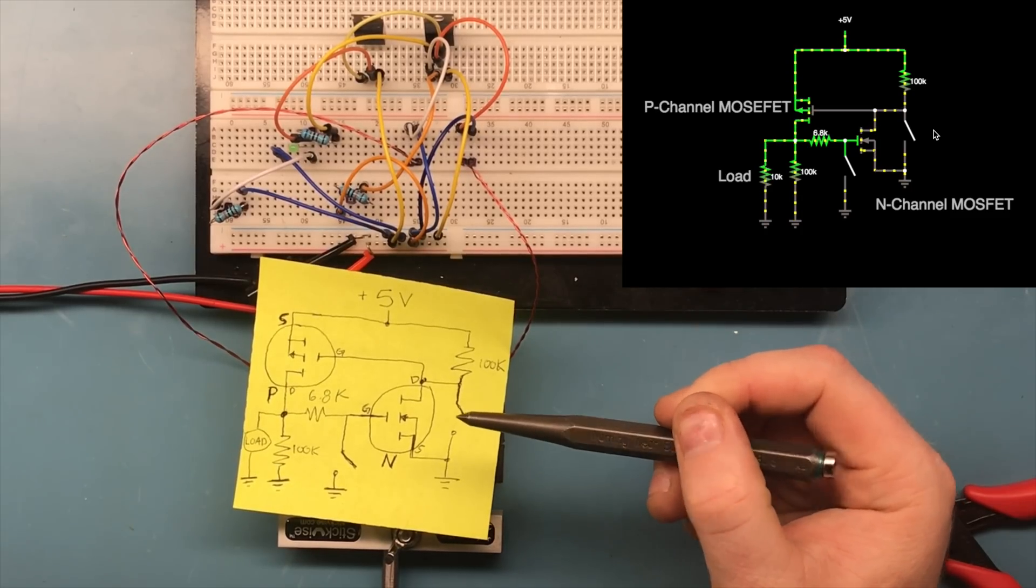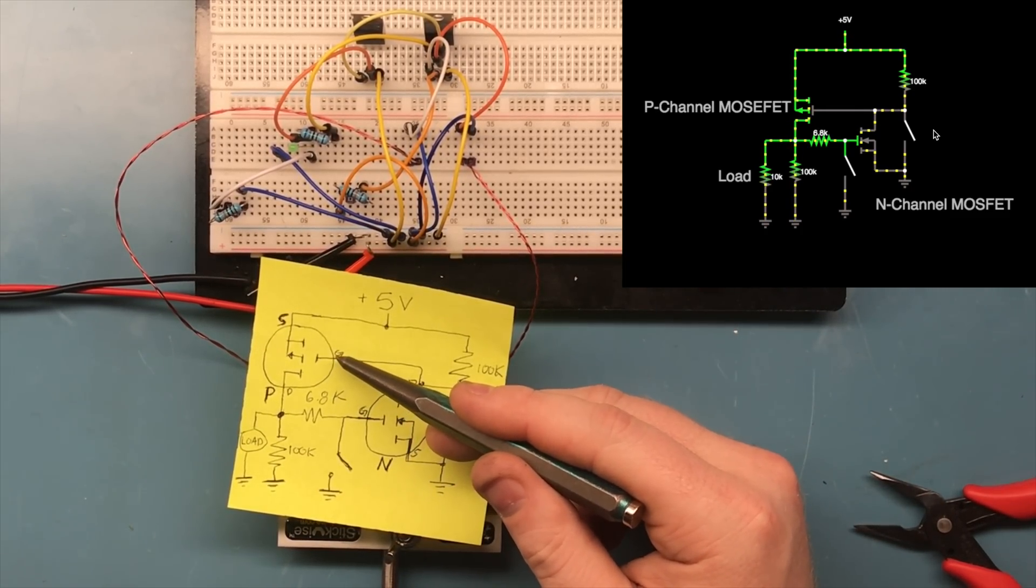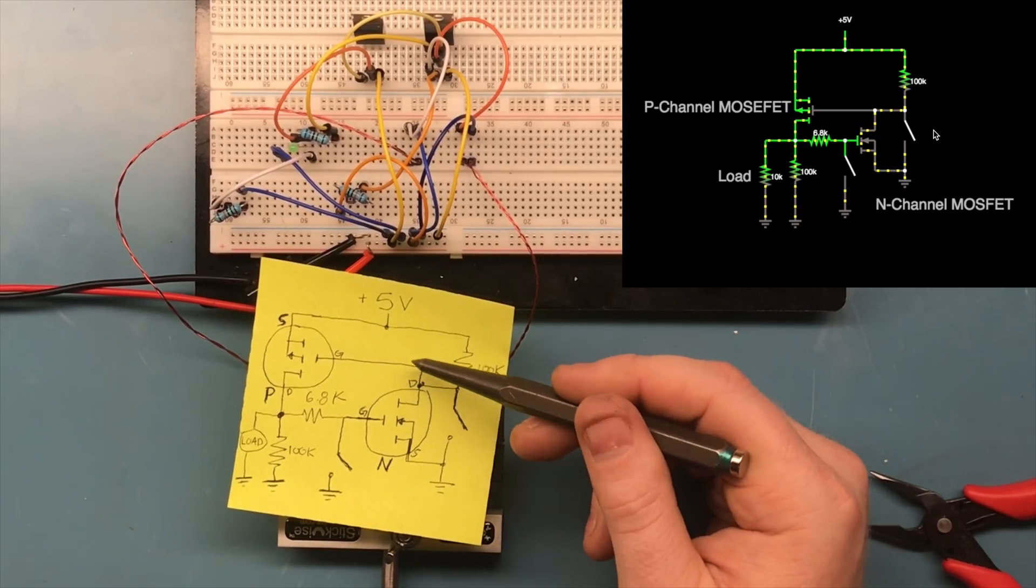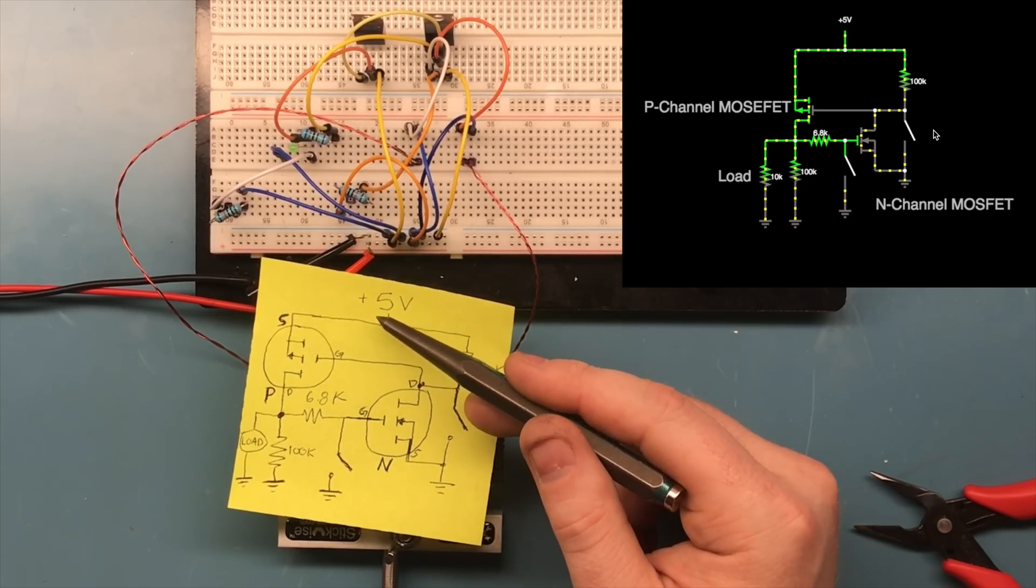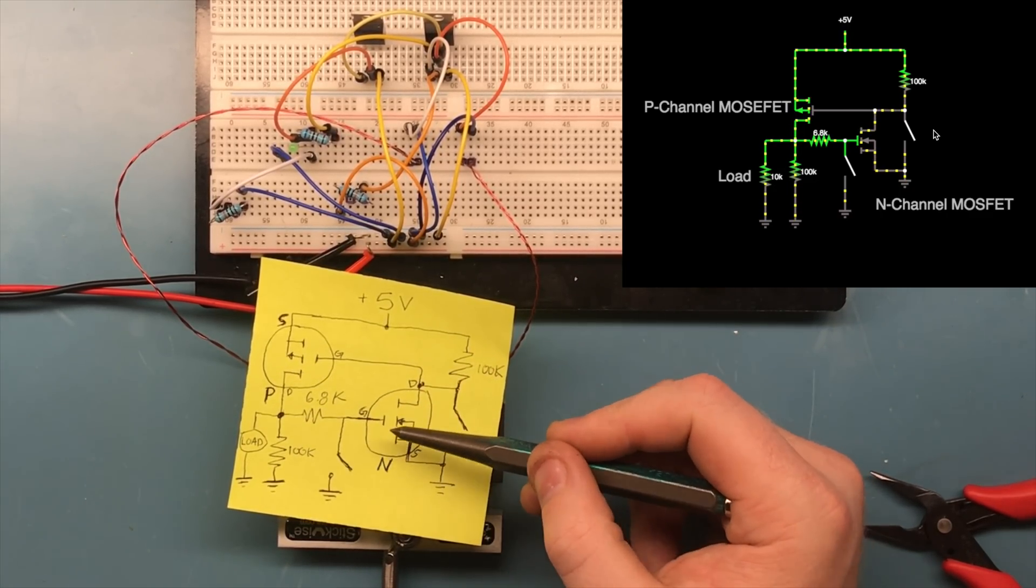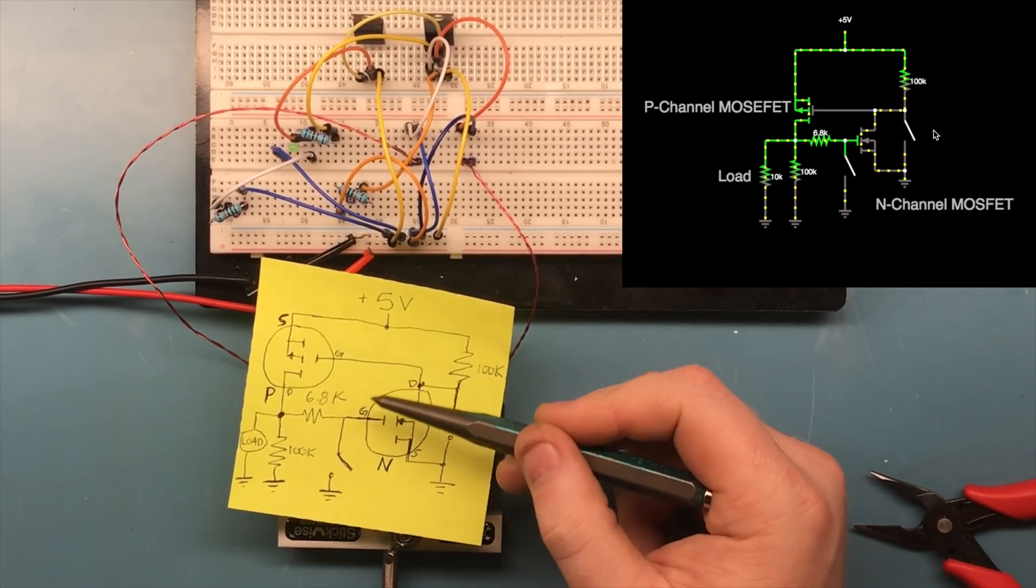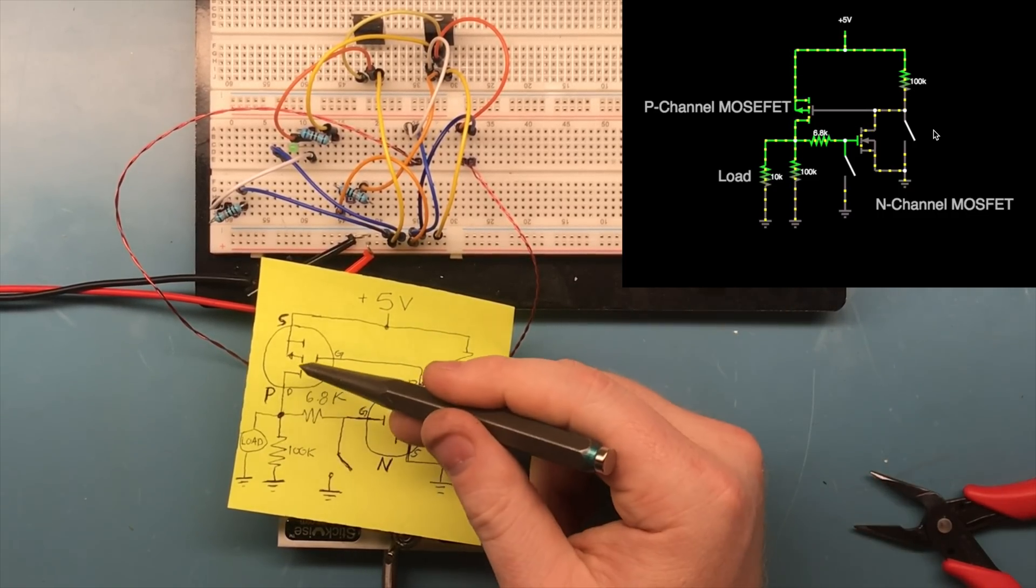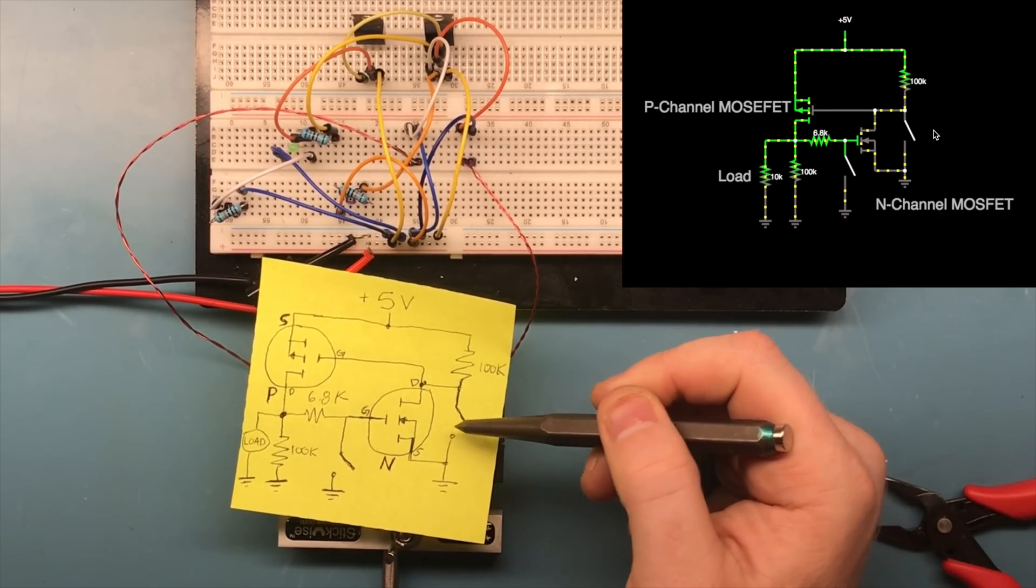The instant you do that, it drops the gate of the p-channel to ground. When that drops to ground, the p-channel turns on. When the p-channel turns on, it brings the gate of the n-channel high and brings the gate of the p-channel down to ground even after the switch has been let go. So this latches the circuit on.